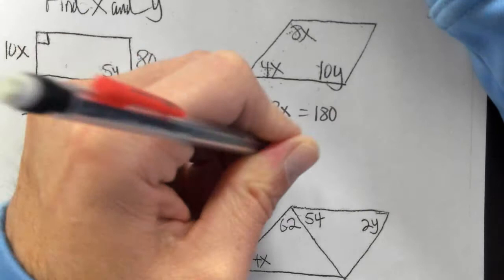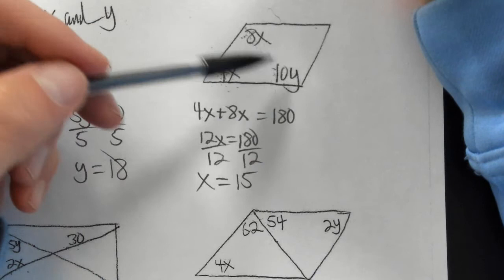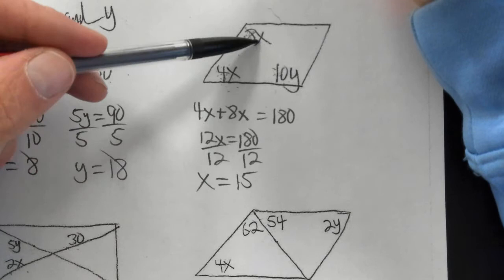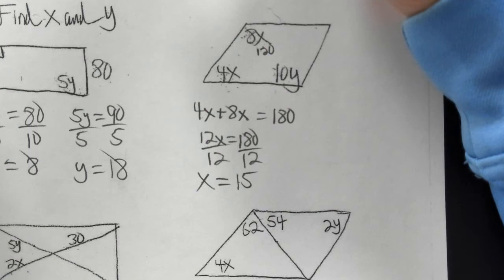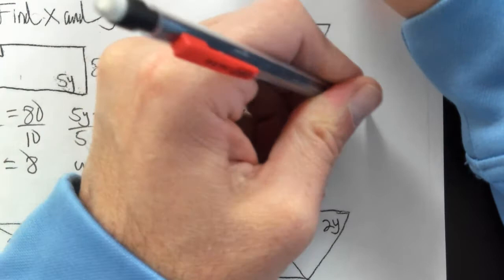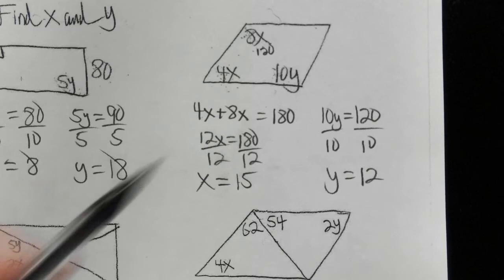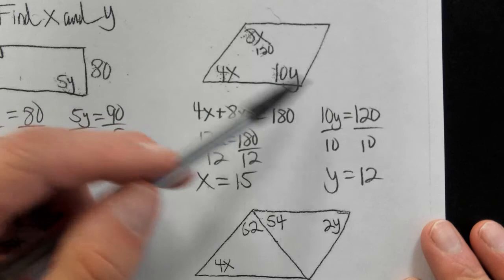For y, I don't want x and y in the same equation. Now that I know x is 15, I plug it back in: 15 times 8 is 120, so that angle is 120 degrees. Since opposite angles are congruent, I write 10y equals 120. Dividing both sides by 10, y is equal to 12. Those are the two answers. Remember, never set up an equation with two different letters — plug the known value back in first.